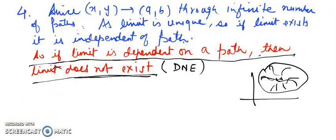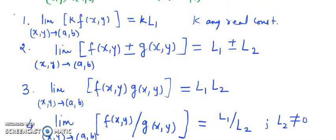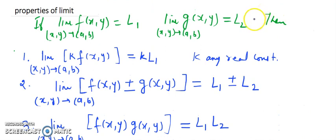There are some properties. Whatever properties of limits of one variable, the same properties are there also. If the limit of f(x,y), one function, and another function g(x,y) at the same point—the first limit is L₁ and second function limit is L₂.